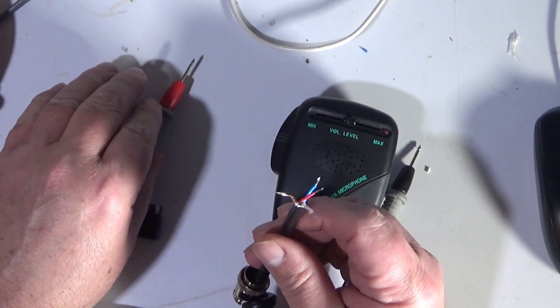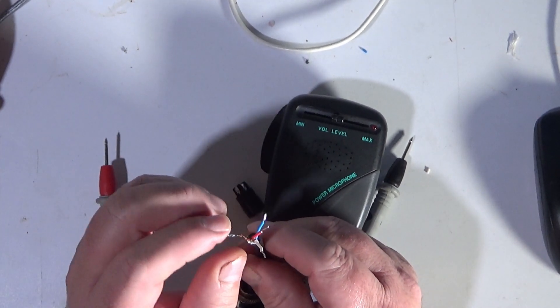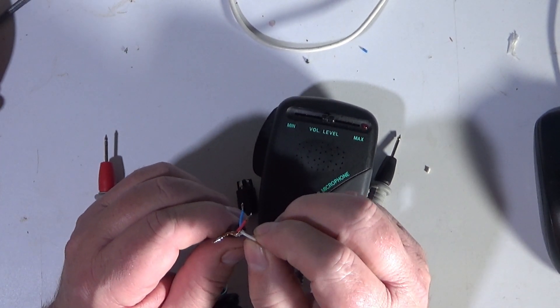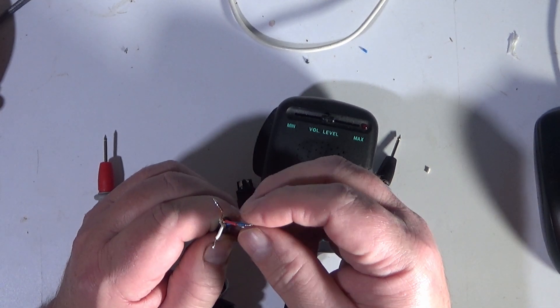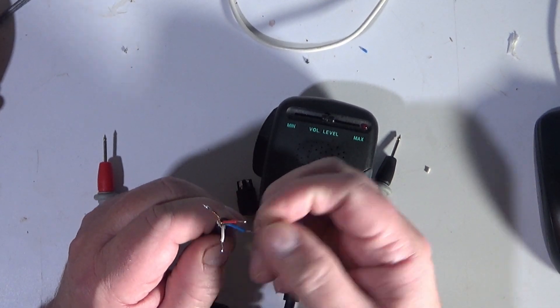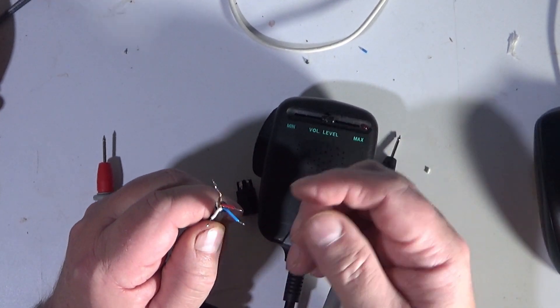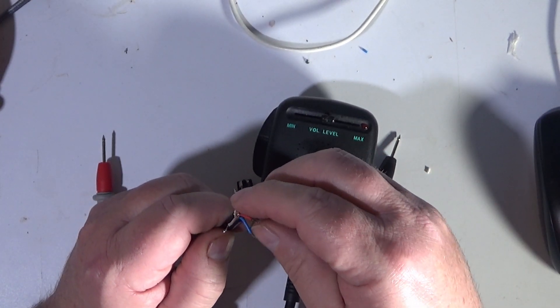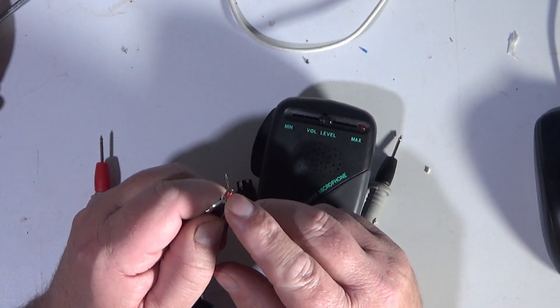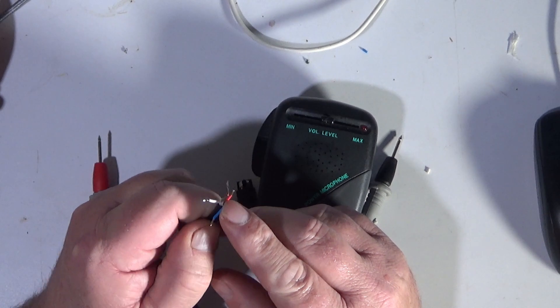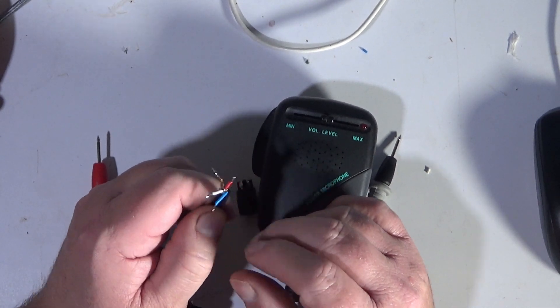So this is really simple guys, you've got your common, your white is your TX, your blue is your RX, which you may or may not need depending on what rig you're wiring it up. So that leaves one wire. And that is your audio wire. That's all you need.